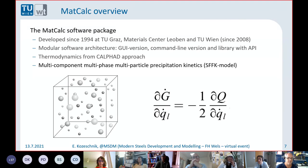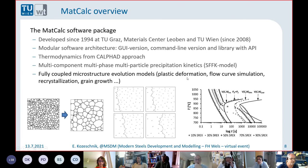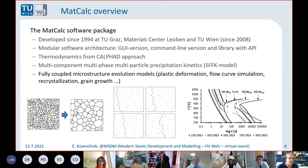The key model in Matkak is precipitation kinetics with a simplification of mean field, applying the thermodynamic extremal principle — but more on that later. One topic we have worked on for several years now is microstructure evolution. To give you a few keywords: it's about plastic deformation, flow curve calculation, recrystallization and grain growth. The nice thing is that it's fully coupled to the precipitation model.